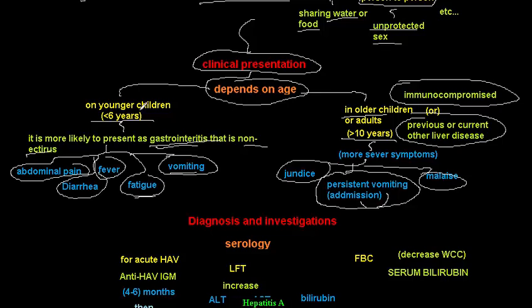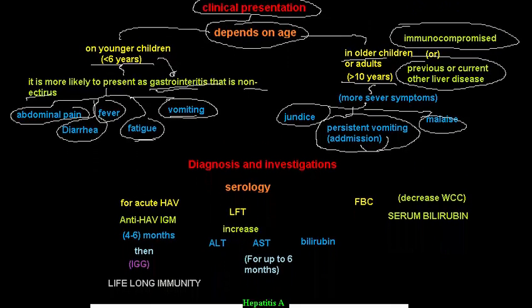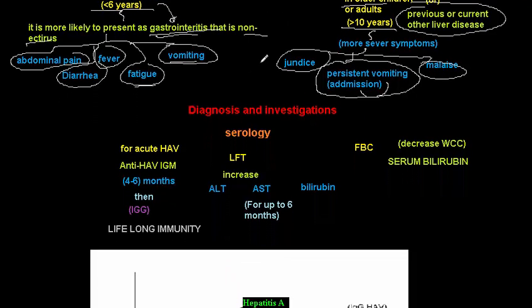Remember: younger children present as normal gastroenteritis, but when you do liver function tests they will be elevated, prompting suspicion of hepatitis A virus, confirmed by IgM examination. In older children, most cases are icteric with jaundice.